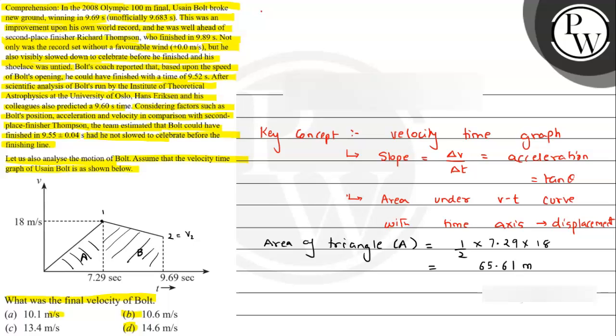So overall displacement, let's say S, what will happen? S equals S_A plus S_B. Displacement under shaded section A plus displacement under shaded section B. Shaded section B we can find as S minus S_A. So S is 100 minus 65.61.